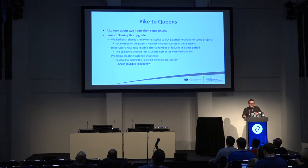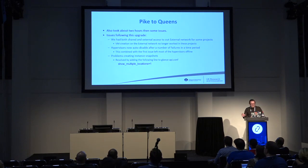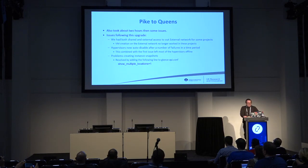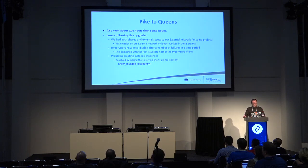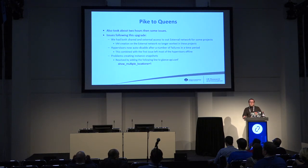In the final upgrade, we did Pike to Queens. Again, we didn't actually have any problems with the upgrade itself. We did the upgrade, and at the end all of our testing was working — that took about two hours. Then we had a couple of problems. One was that our hypervisors were now auto-disabled after a number of failures. That was made worse because some projects had two ways of accessing the external network — both as an external network and as a shared network to place VMs directly on the external network. That no longer seemed to work after the Pike to Queens update, and it wasn't something we tested for because we weren't completely aware that was how users were using it.